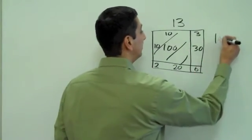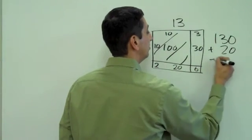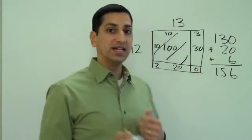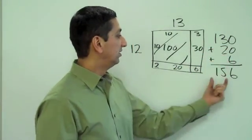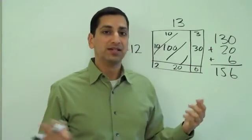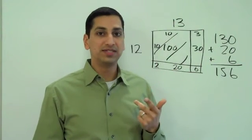We have to add that all up, 130 plus 20 plus 6, 156. And you can see in that 12 times 13 problem, that's exactly what we did. We did the 13 plus the 2, we got the 15, we did the 2 times the 3 to get the 6 and we were done. So, it was just a shortcut for adding all this stuff up in two easy steps.